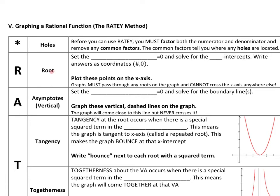The next thing you're going to find are the roots of the function, which is what the R stands for. Roots are found by setting the numerator equal to 0 and solving for the x-intercepts. The roots are the same thing as the x-intercepts, the solutions, the zeros, but we're going to answer these as coordinate points and plot them on the x-axis. Note that graphs must pass through the roots, and that's the only place it can cross — you cannot cross the x-axis anywhere else unless it's one of the roots.